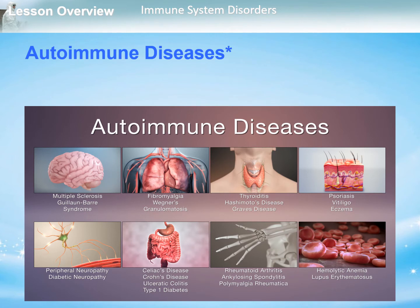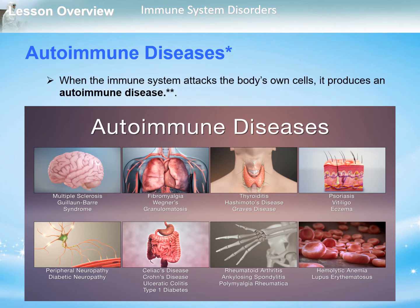Sometimes a disease occurs in which the immune system fails to properly recognize self and attacks cells or compounds in the body as though they were foreign. When the immune system attacks the body's own cells, it produces an autoimmune disease. Examples of autoimmune diseases include type 1 diabetes, rheumatoid arthritis, and lupus. In type 1 diabetes, antibodies attack insulin-producing cells in the pancreas.